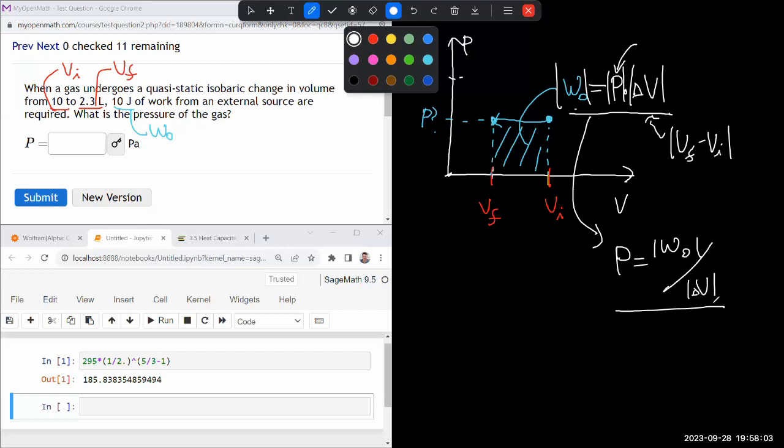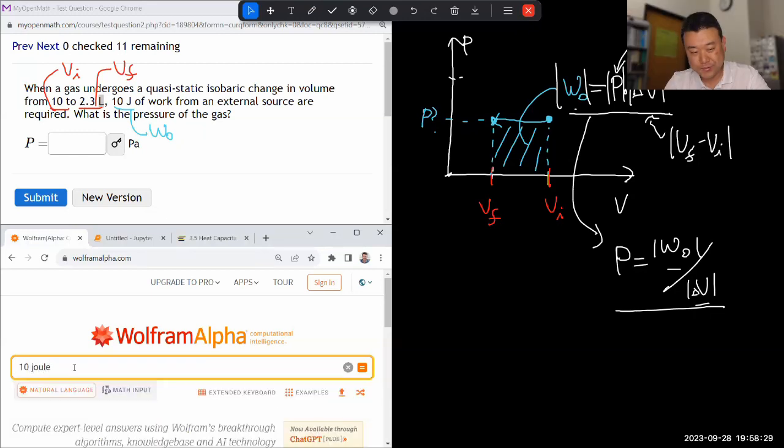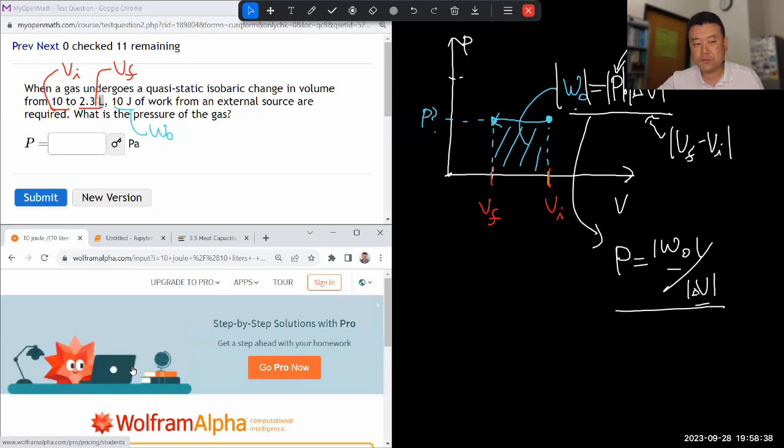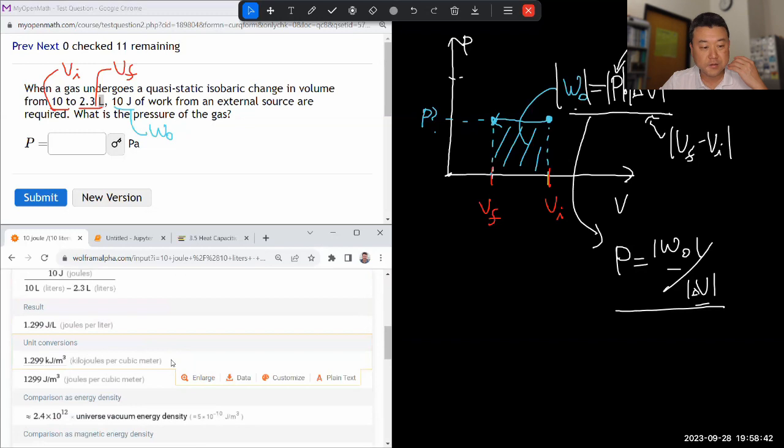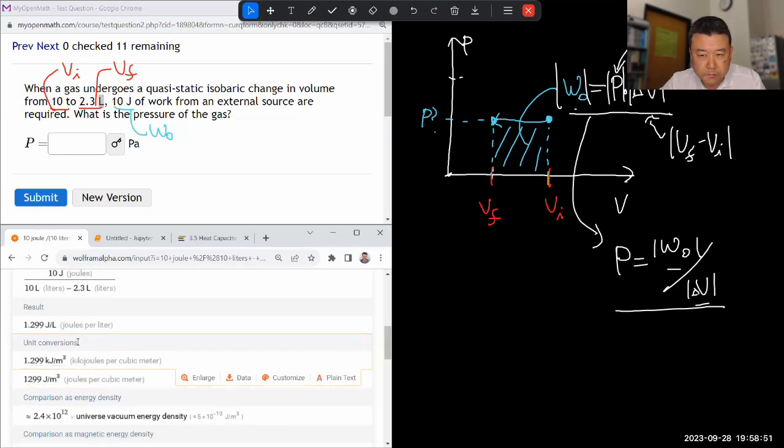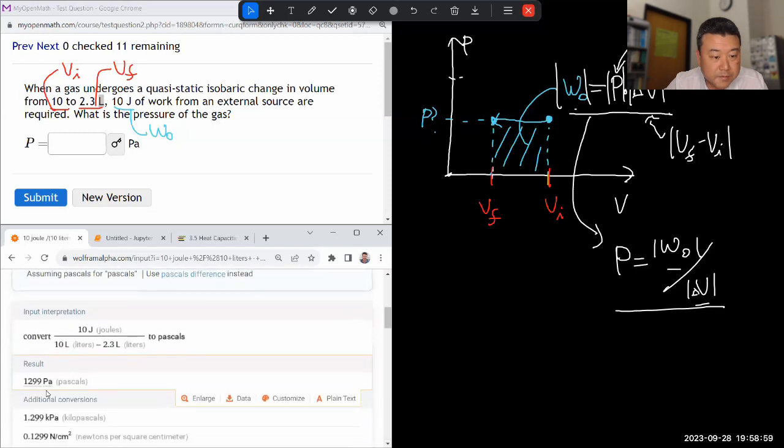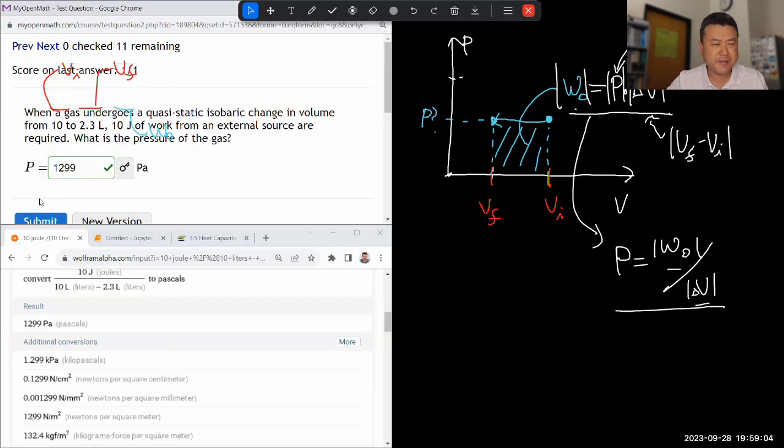I was gearing up for something more complicated using the first law of thermodynamics and all that stuff. And I don't think I need it. Because this just gets the pressure in terms of everything. So let me just do one thing. Because the unit that it gives liters, that's not basic SI units. One liter is not one cubic meter. So I'm just going to use Wolfram Alpha so that Wolfram Alpha can do unit conversion for me. So I'll say 10 joules divided by, and absolute value, 10 liters minus 2.3 liters. And Wolfram Alpha will do the unit conversion on its own and give me an answer in terms of Pascal somewhere. In Pascal? 12.99 Pascal. That's it. Simpler than I thought it was going to be.